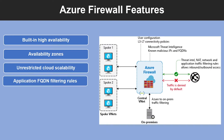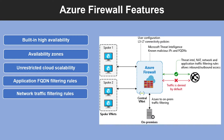The fourth feature is application FQDN filtering rules, so you can limit outbound HTTP and HTTPS traffic or Azure SQL traffic to a specified list of fully qualified domain names including wildcards. The fifth feature is network traffic filtering rules, so you can centrally create, allow, or deny network filtering rules by source and destination IP addresses, port, and protocol.